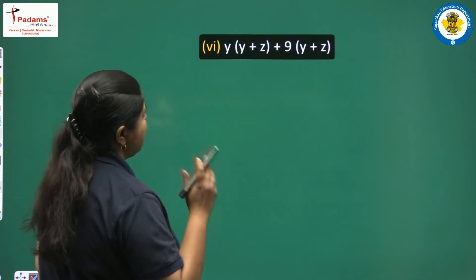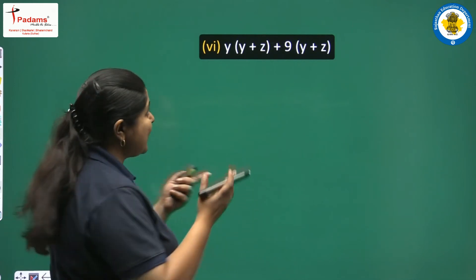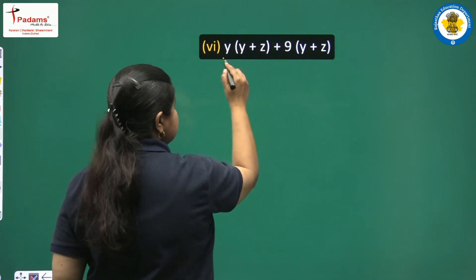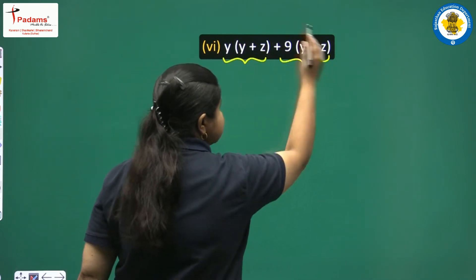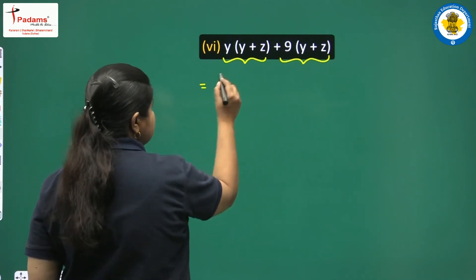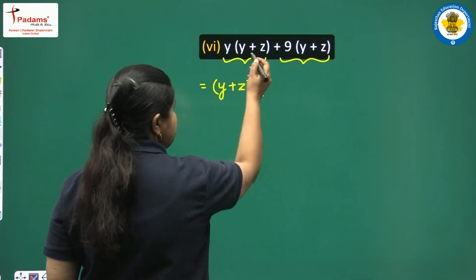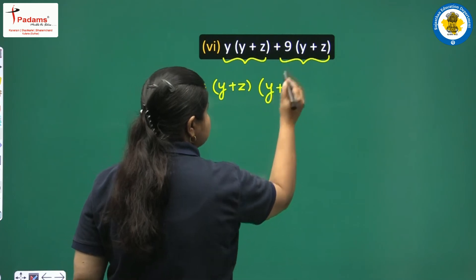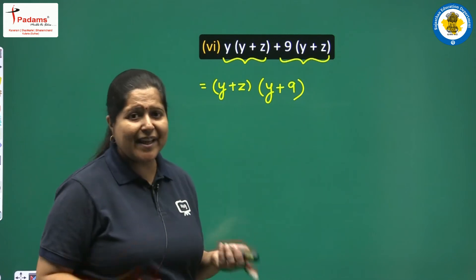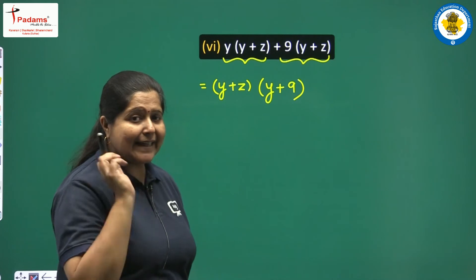Next: y(y + z) + 9(y + z). Here after grouping, we directly see two terms with (y + z) as the common factor. Taking (y + z) out, we get (y + z)(y + 9). This is a single-line answer — what we need is just proper, clear understanding.